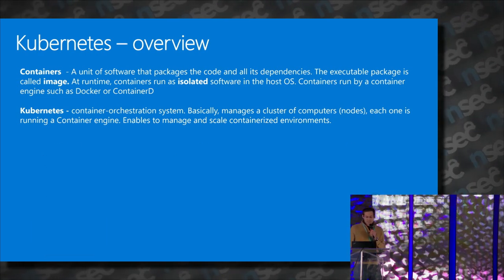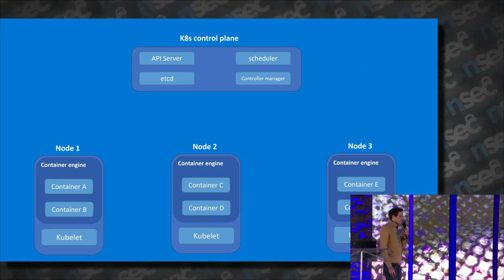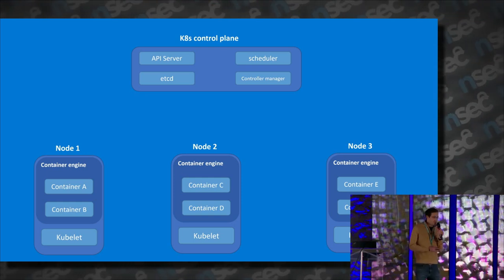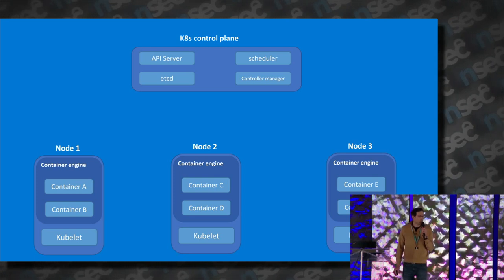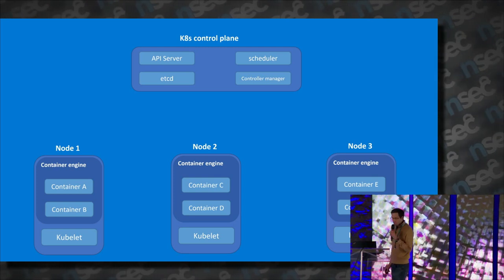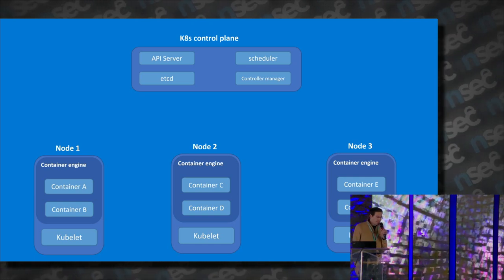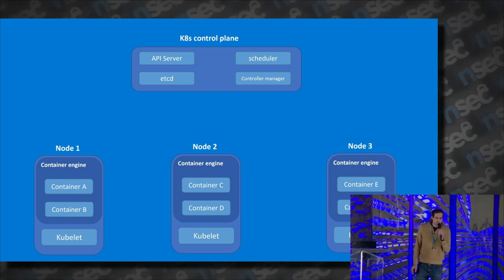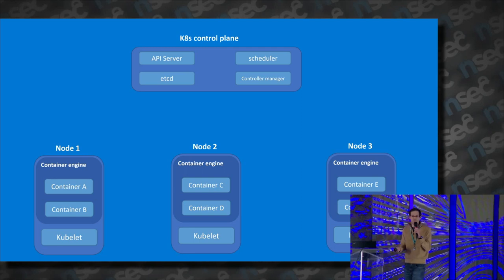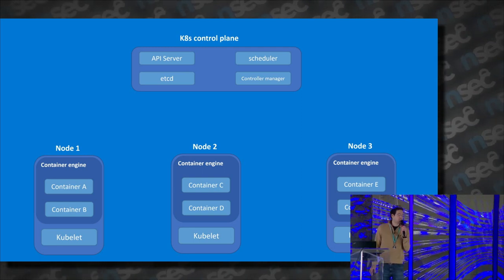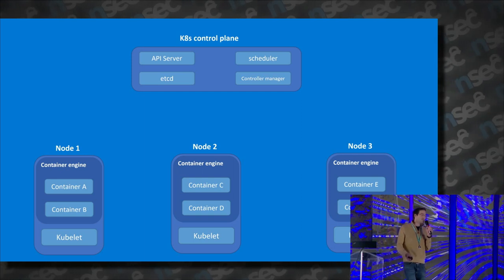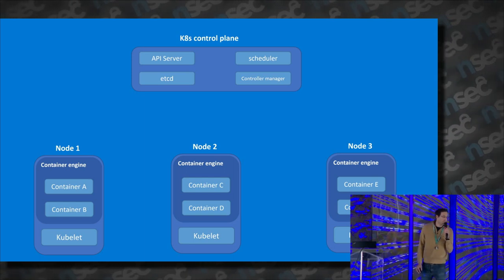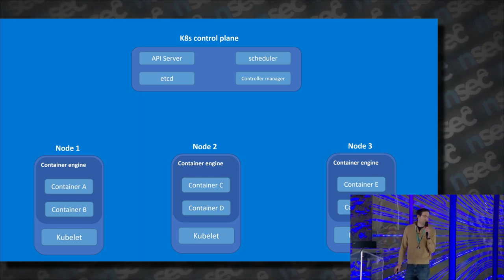This is a Kubernetes cluster, and you can see it has two main parts: the control plane, which is like the brain of the cluster, and the nodes which run the actual containers. The control plane has several components. What's especially interesting for us is the API server, which is like the front end of the cluster. Every request to the cluster goes via the API server — for example, if you want to create new containers or list all the resources in your cluster.